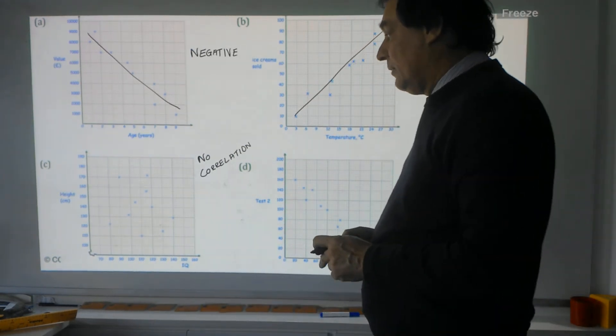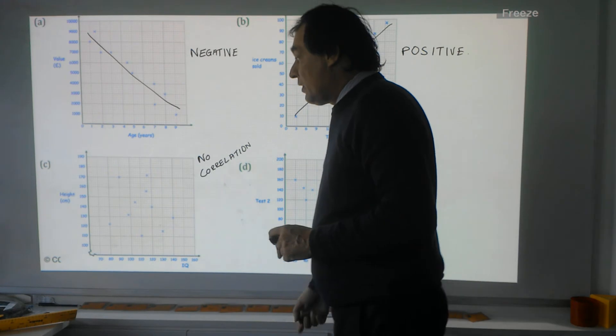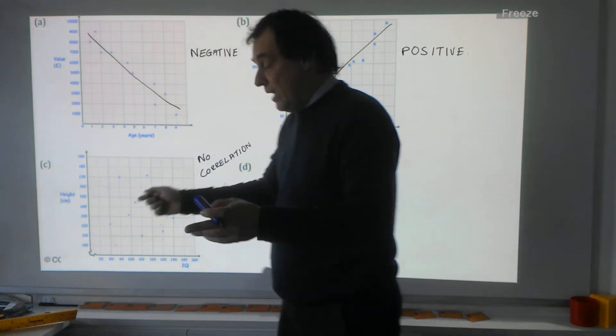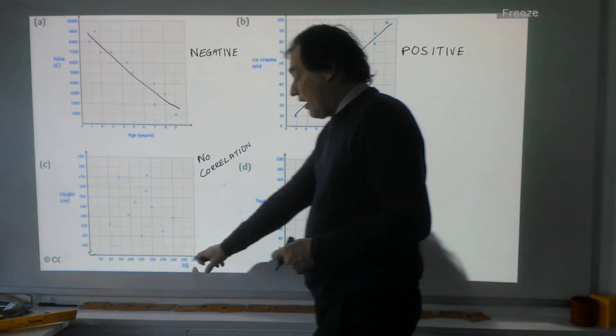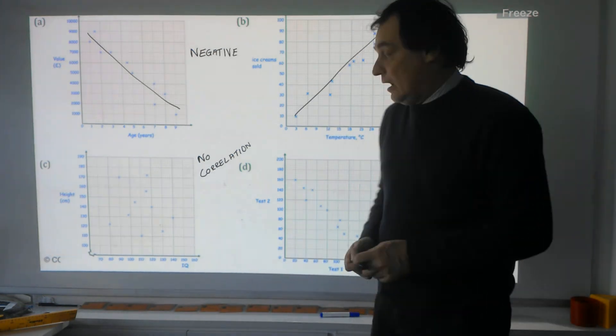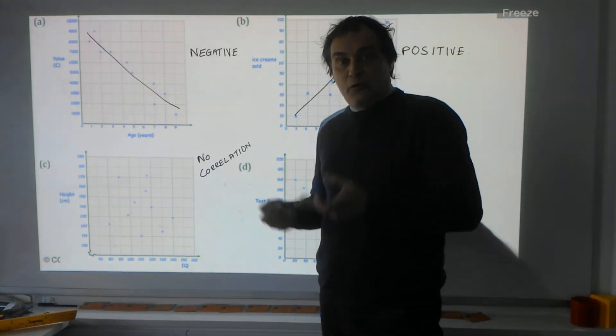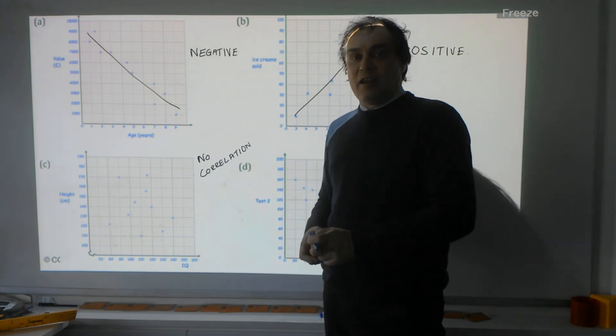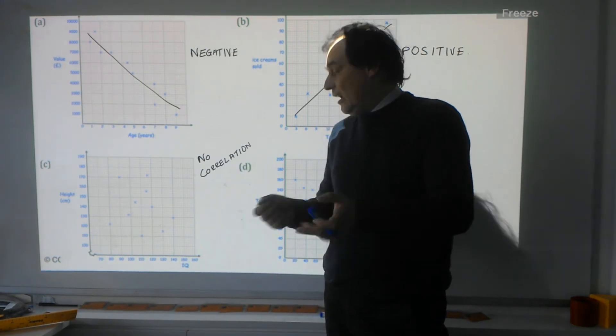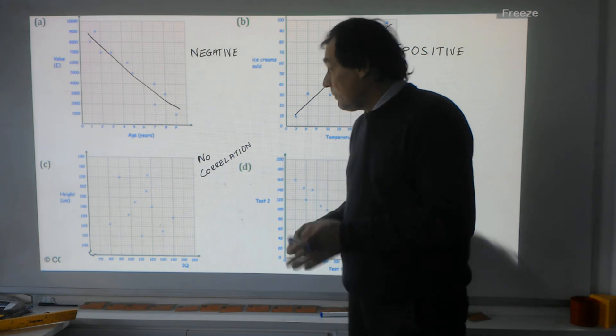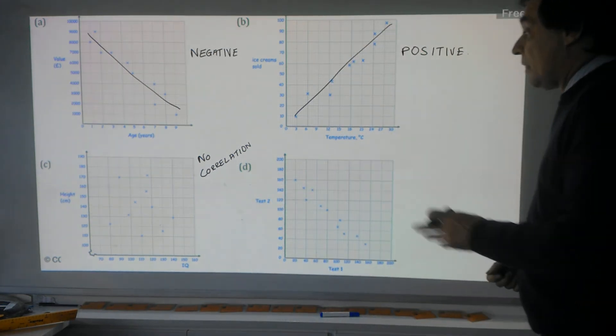What they're saying here is they're comparing the height of a person to their IQ—how brainy they are. What it's saying is how tall you are has absolutely nothing to do with how brainy you are. So, no correlation, no link between height and intelligence.